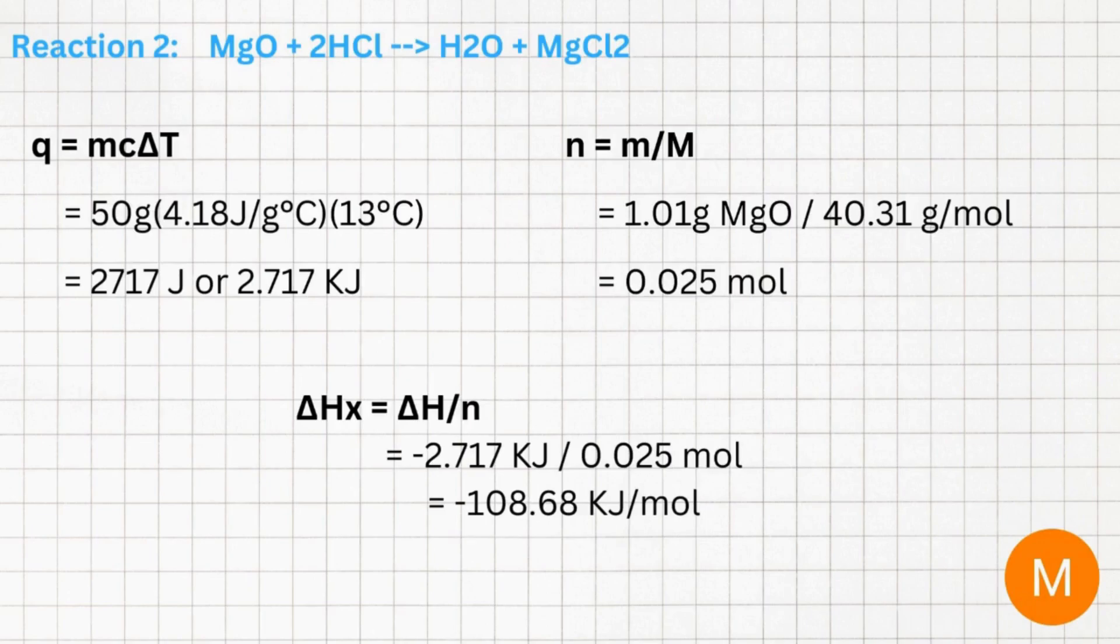Now we can repeat these same steps for our second reaction using the measurements recorded of our magnesium oxide and our change in temperature, which is 13 degrees Celsius. This gives us a molar enthalpy of negative 108.68 kilojoules per mole.